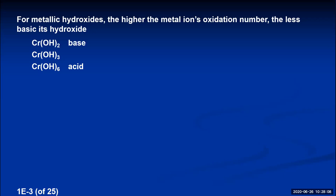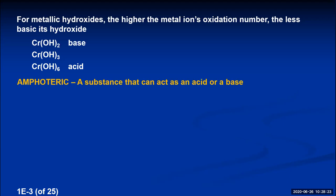The substance in between — where chromium has a +3 charge — sometimes acts as an acid and sometimes as a base. There is a name for substances that can act both as acids and bases depending on their situation: we call those amphoteric. So chromium(III) hydroxide, depending on what type of solution you put it in, can be an acid or a base — it's considered amphoteric.